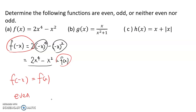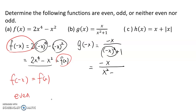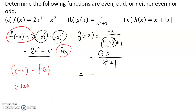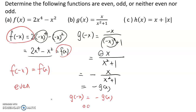Next, let's look at part b. Similarly, we want to find g of negative x. We replace x with negative x in the function, giving us negative x over negative x squared plus 1. That simplifies to negative x over x squared plus 1, which we can rewrite as negative of x over x squared plus 1. Since g of negative x is equal to negative g of x, this is an odd function.